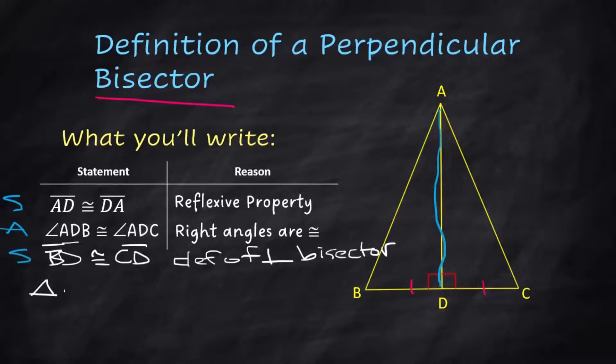Triangle ABD is congruent to triangle ADC. And the reason is side angle side triangle congruence.